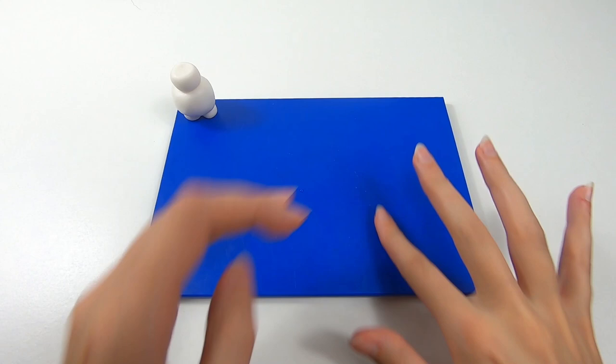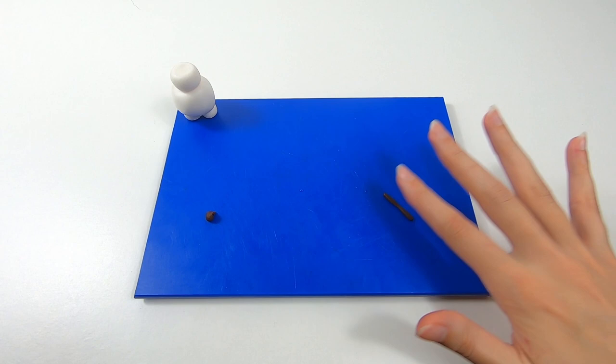Now onto Olaf's hands and arms. Using the same brown modelling paste as we did for the eyebrows and hair. Roll this out to create the arms.